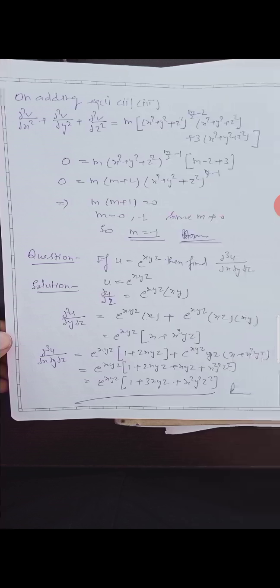Now on adding equations first, second and third, we get ∂²v/∂x² + ∂²v/∂y² + ∂²v/∂z² equal to m(x² + y² + z²) to the power (m/2 − 1) into (m − 2 + 3), which equals m(m + 1)(x² + y² + z²) to the power (m/2 − 1). For this to equal 0, we need m + 1 = 0, giving m = 0 or m = −1. But since m ≠ 0, we have m = −1.